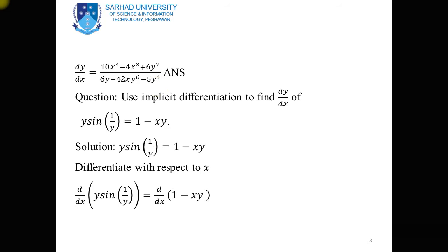Another problem: y·sin(1/y) = 1 − x·y. Dear students, this is an implicit function and we cannot express it in explicit form. So we take the derivative in implicit form — this derivative is called implicit differentiation. We use implicit differentiation when we cannot convert an implicit function into explicit form.